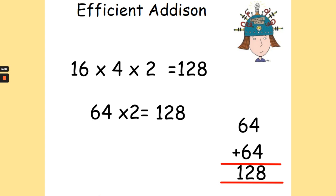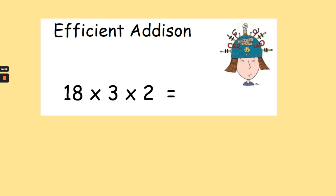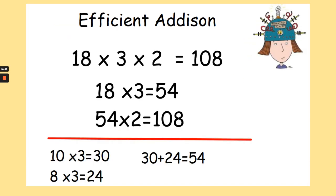Now Efficient Addison would like you to give this one a go. So 18 times 3 times 2. 18 times 3 is 54. Below, I've shown how you could have broken it down if you're finding that a little bit tricky. So we know 10 times 3 is 30, 8 times 3 is 24. 30 add 24 equals 54. And then you need to double 54, and your answer would have been 108.